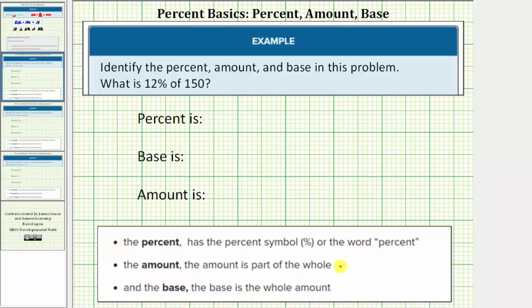For these three examples, we won't be answering the questions. We'll only be determining these three key components. Let's look at our first example. Here we're asked what is 12% of 150? Notice how we're given the percent. The percent is 12%.